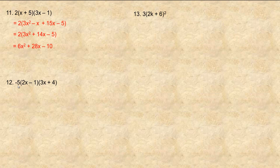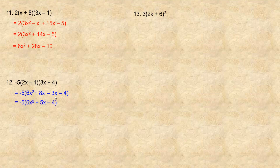For question 12, same approach — leave the negative five out front and multiply the binomials first. 2x times 3x is 6x squared, 2x times four is 8x, then negative one times 3x is minus 3x, and negative one times four is minus four. Collecting like terms: 8x minus 3x is 5x. So we have negative five times (6x squared plus 5x minus four). Distributing: negative five times 6x squared is negative 30x squared, negative five times 5x is minus 25x, and negative five times negative four is plus 20. Final answer: negative 30x squared minus 25x plus 20.